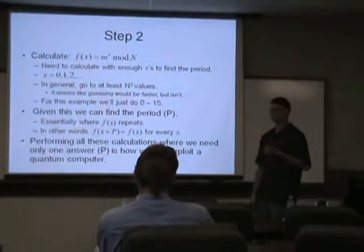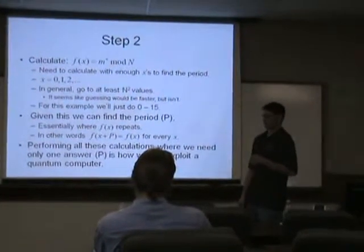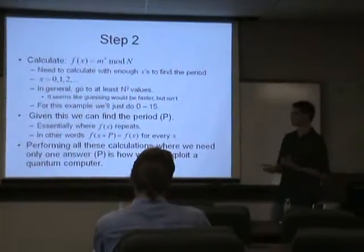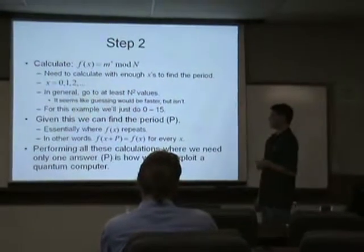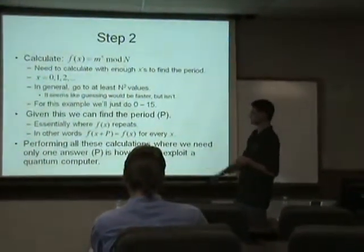The general rule of thumb is we have to go to big N squared values of that. At first I thought why don't we just guess, pick a number to try, but it turns out that that isn't any better. To keep us short in this example, we'll just go through 0 to 15.